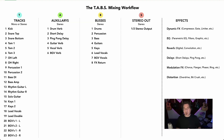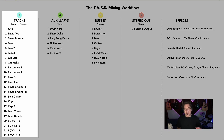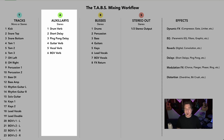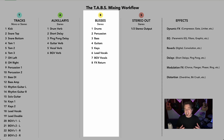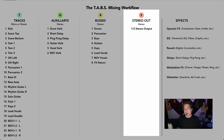What you see here is a graphic representation of the TABS Mixing Workflow. In the left-hand corner you see the T for tracks, which are mono or stereo, and you can see there's a bunch of tracks like a regular recording. Moving on to the A for auxiliaries — auxiliaries are stereo and they're going to be housing our effects, specifically reverbs and delays. Then we move to our buses, where we collect like-kind instruments — also stereo. And finally the S for stereo out, represented by channel 1 and channel 2 stereo output.